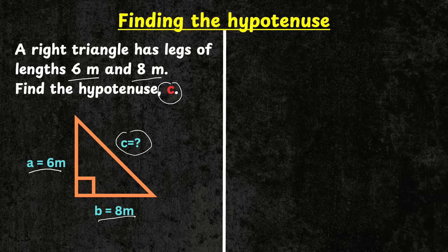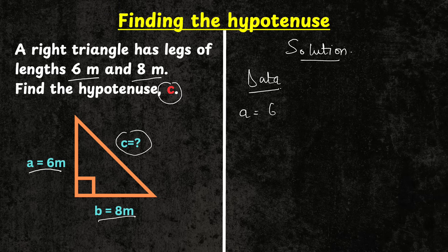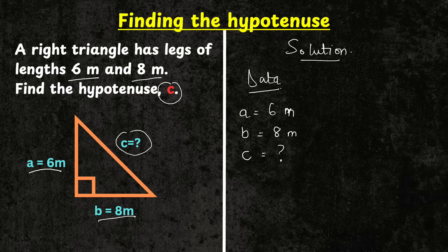To solve this problem we use the Pythagorean theorem because this is a right triangle and we are given the length of the two legs and asked to find the length of the hypotenuse, which is side C. Given A equals six meters and B equals eight meters, and C is unknown. We apply the Pythagorean theorem: A squared plus B squared equals C squared.